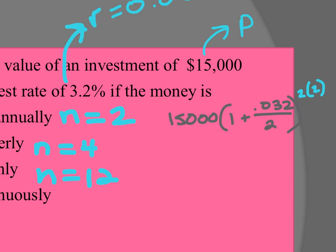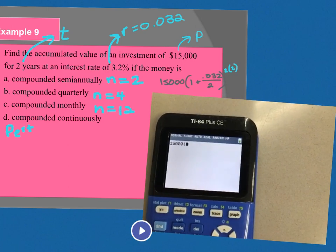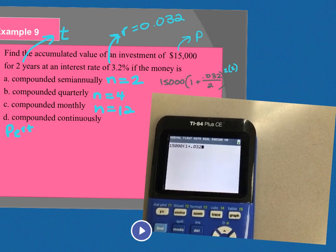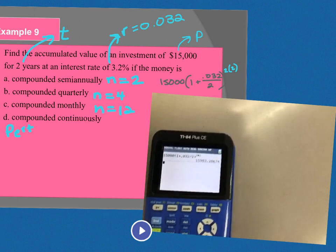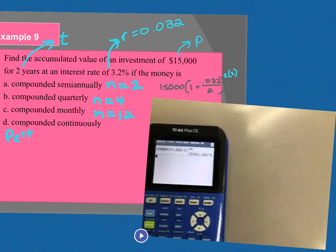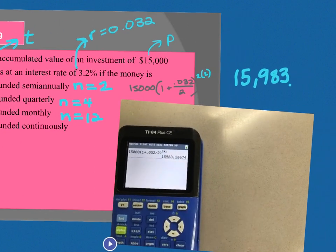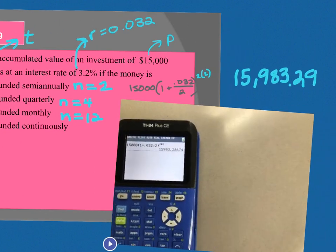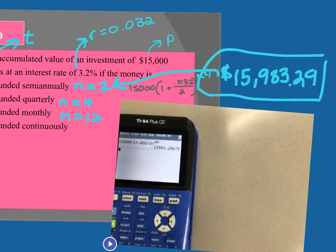And then just type it in. You can actually, because the order of operations, as soon as you put those parentheses in, it's going to do what's inside first and division before addition. You don't have to regroup them. So I'm going to type it in, 15,000, 1 plus .032, divided by 2, raise it to the power of 2 times 2. So I get 15,983, and this is money, so I'm rounding that to the 29 cents. That's A.